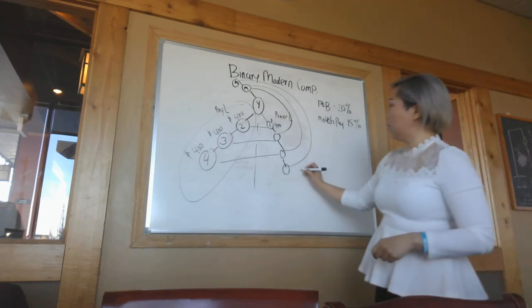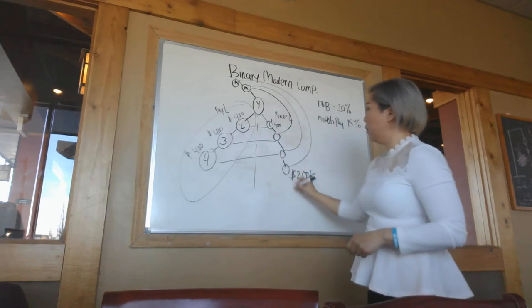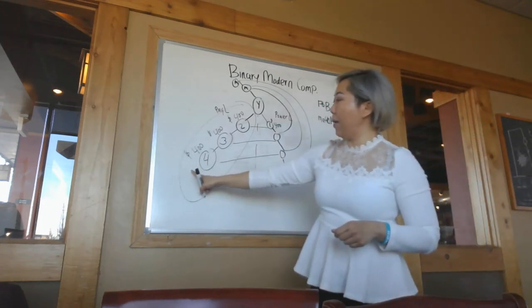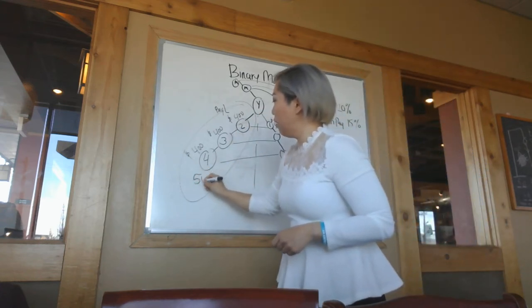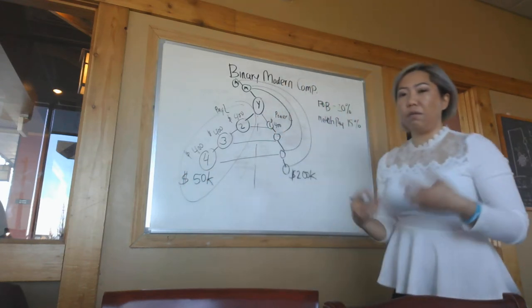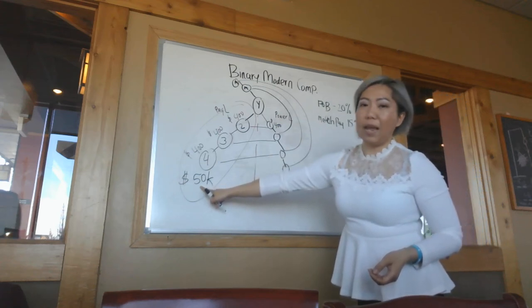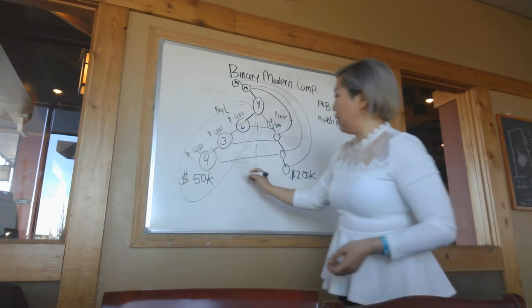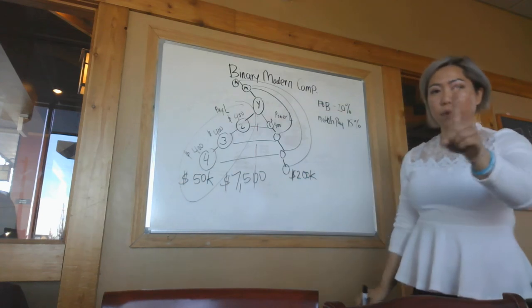So for example, let's just say this week the power leg, we sponsor a volume of $200,000 of volume. And your pay leg, which is the one that you have to match, you made a $50,000 sponsor or volume. You're going to get 15% of your pay leg, which is 50K. What's 15% of 50K? That is $7,500.